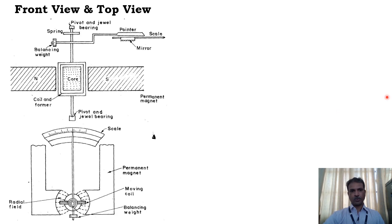Let's see the front view and top view of a PMMC instrument. Here we can see there are north pole and south pole. In between these permanent magnets we have the core, and on top of that we have the former, and on top of that we have the winding.